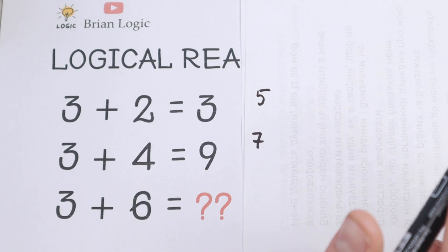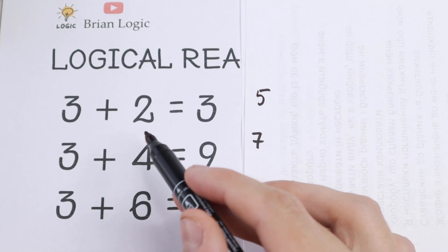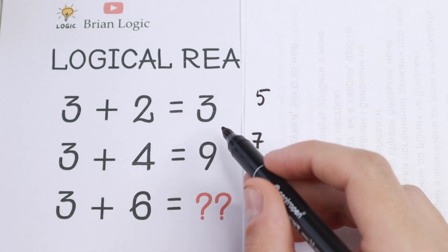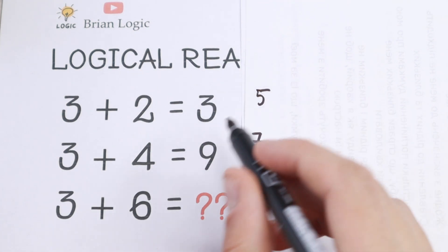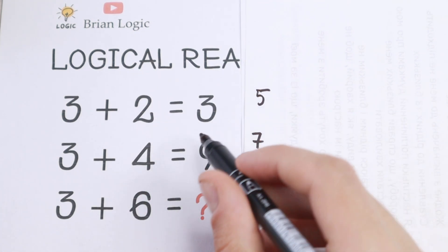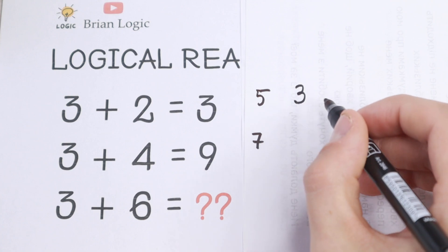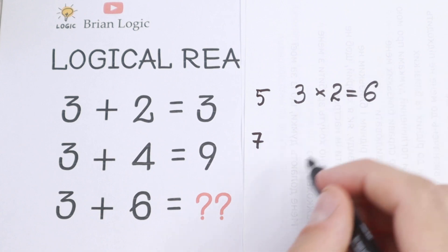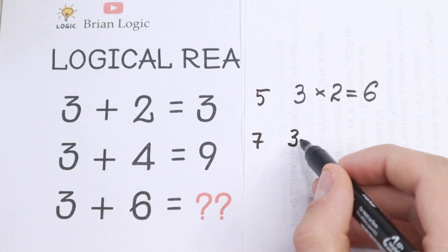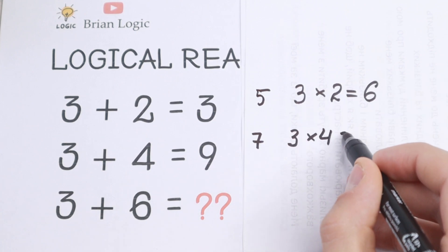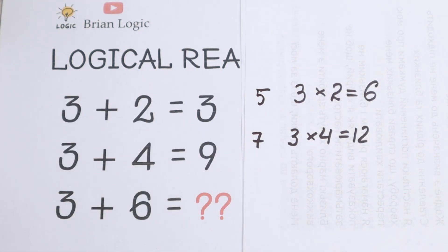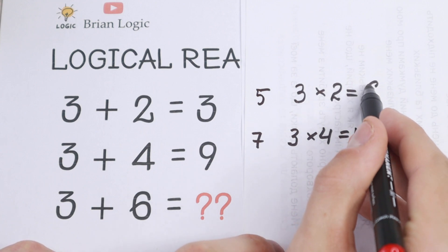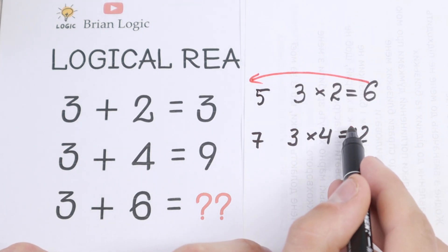Let's use another logic. Looking at 3 plus 2 equal to 3 — instead of adding, if we multiply 3 by 2, we get 6. And for the second row, if we multiply 3 by 4, we get 12. Now I see a really interesting pattern between the first row: 6 and 3, and the second row: 12 and 9.